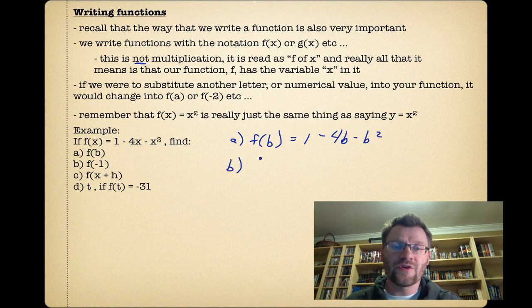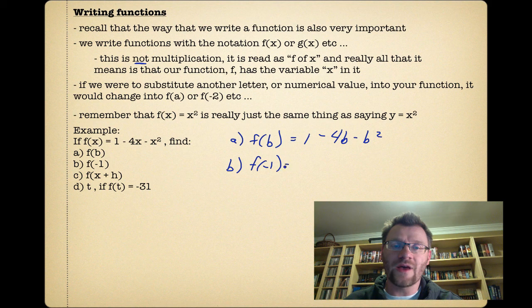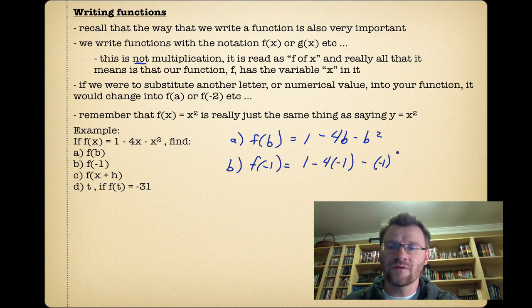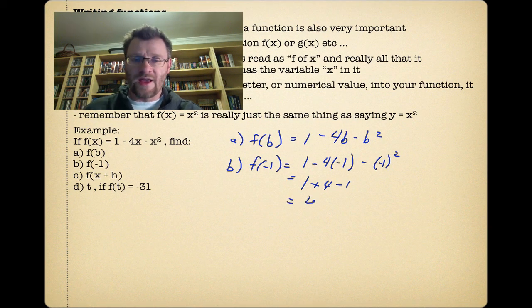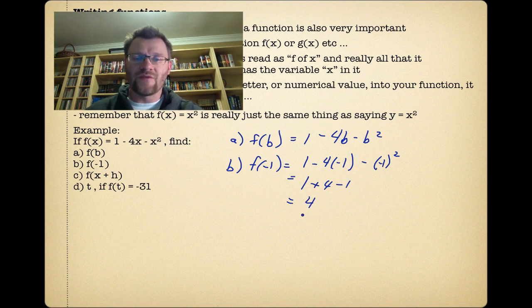Part b, if we're going to find f(-1), we're just evaluating this function at -1. So wherever we see an x, we're going to put in a -1 instead. So that turns into 1 - 4(-1) - (-1)². That turns into 1 + 4. Negative 1 squared is positive 1, and this negative outside makes it a -1 again. And that makes it a 4. So f(-1) = 4.